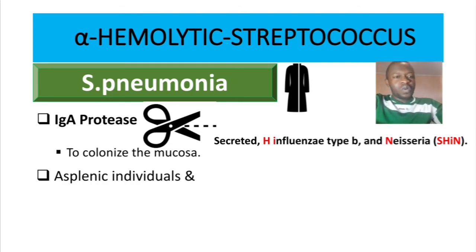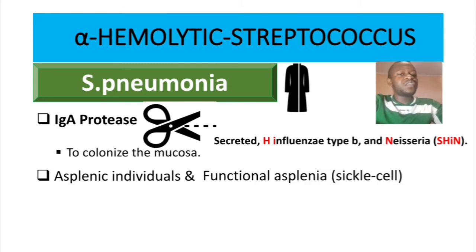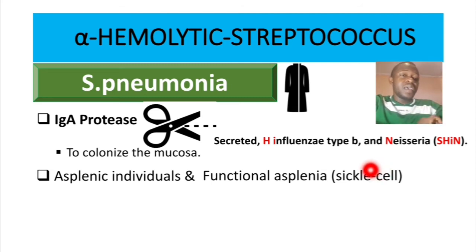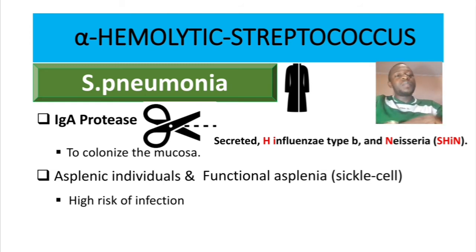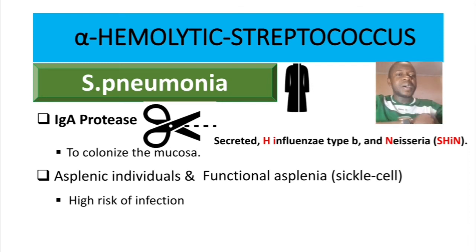Asplenic individuals — people without a spleen — and those with functional asplenia, such as individuals with sickle cell anemia, have a higher risk of infection by Strep pneumo and other encapsulated bacteria, because the spleen plays an important role in elimination of encapsulated pathogens.